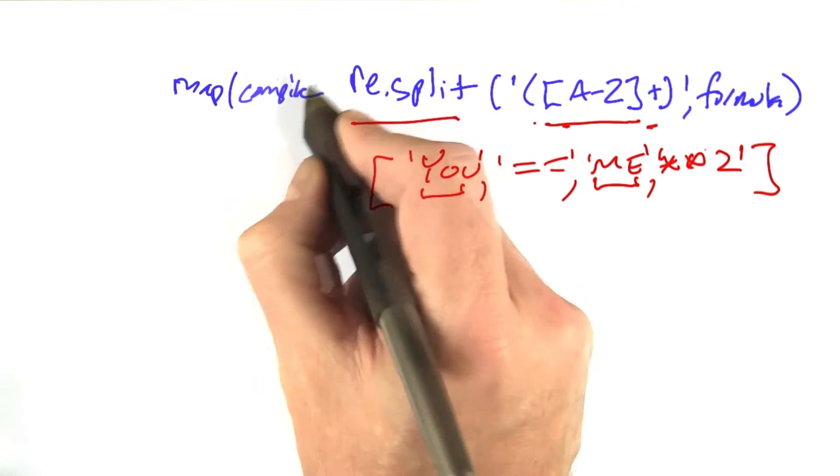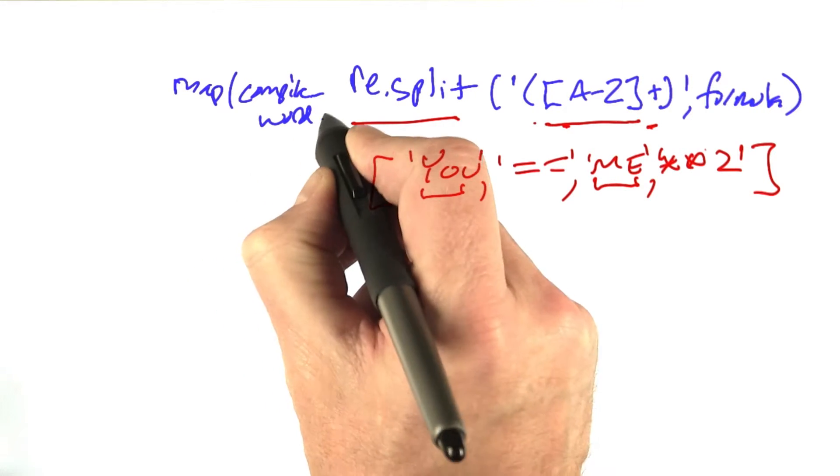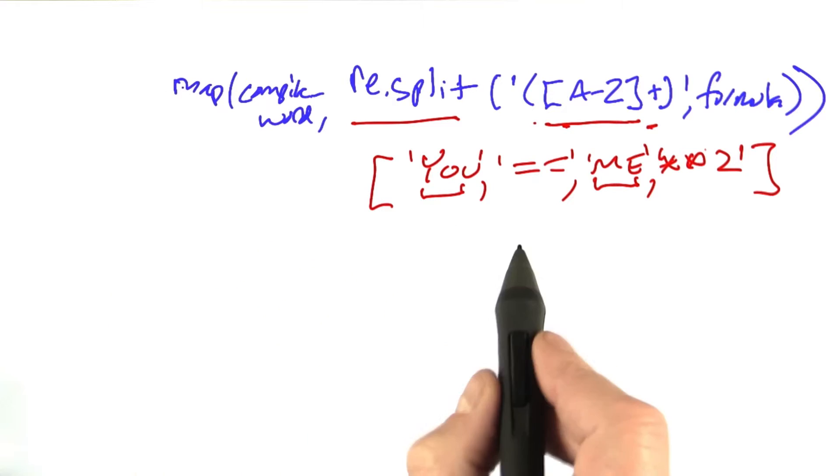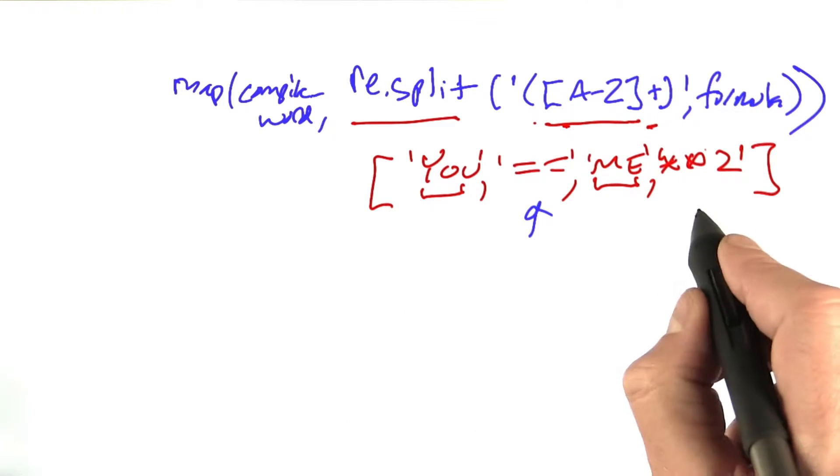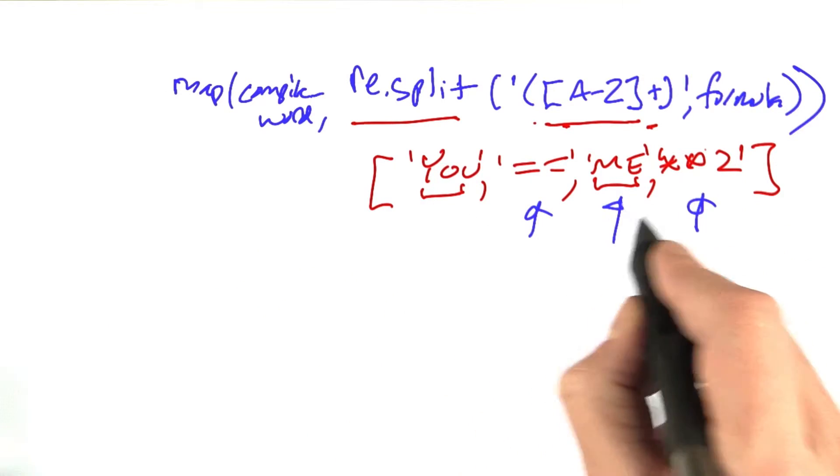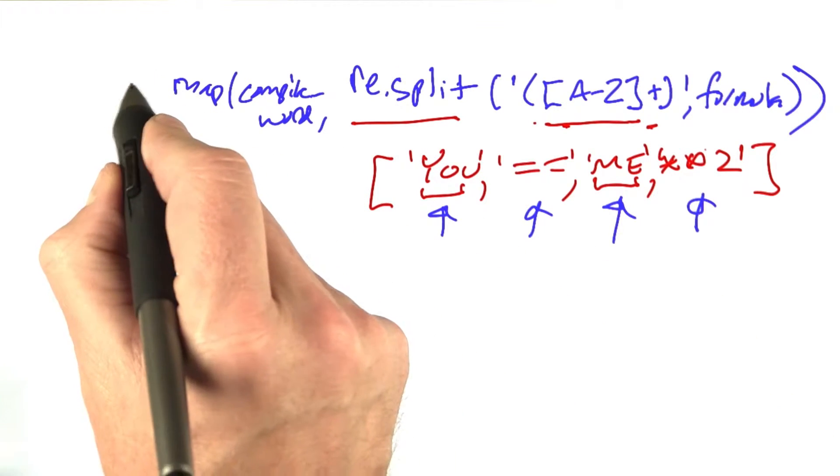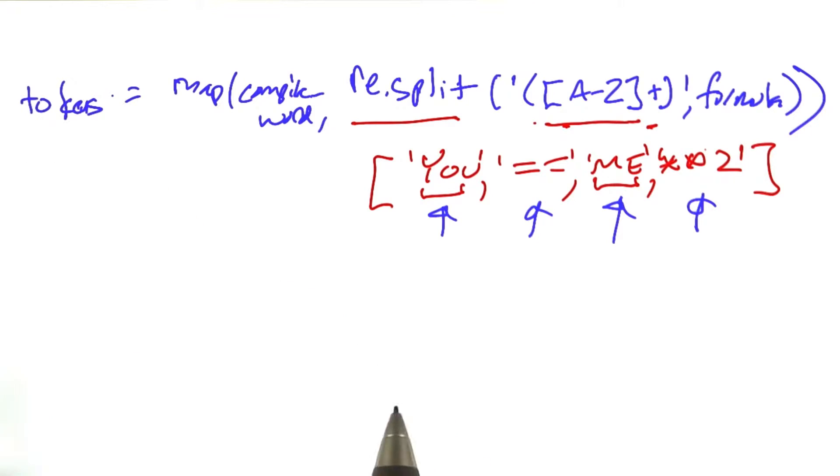and then I'm going to map compile_word to re.split, and that will give me these tokens will remain unchanged, and these will be converted into the form that multiplies out the digits, and then I'm going to assign that to the variable tokens.